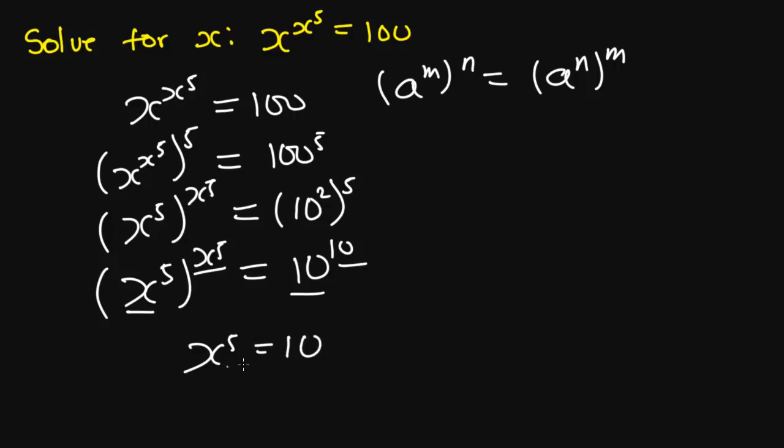And from here we are going to take the fifth root of both sides so that we get the value of x. We are going to have x to be equal to the fifth root of 10, and this will be our value for x.